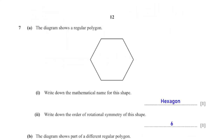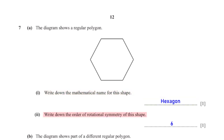The diagram shows a regular polygon. Write down its mathematical name. The polygon has six sides, so it is a hexagon. Write down the order of rotational symmetry. The order of rotational symmetry of a regular hexagon is 6.